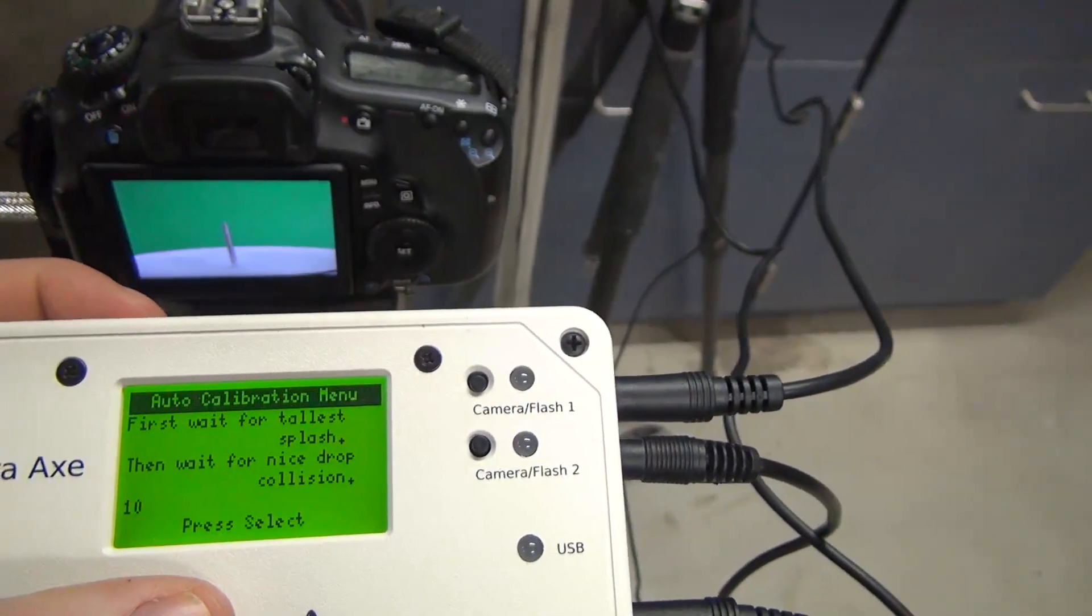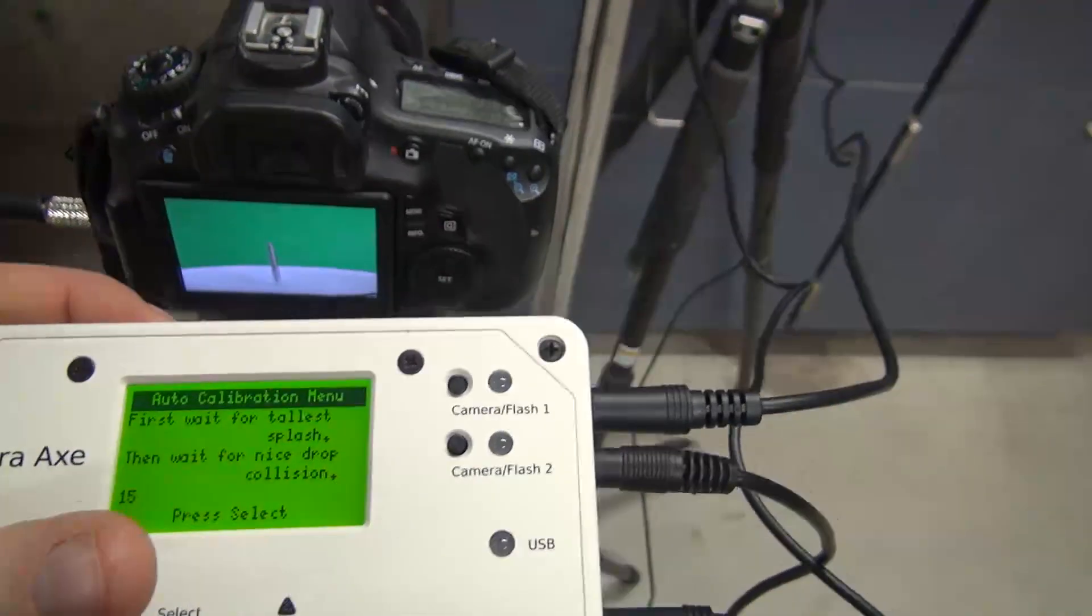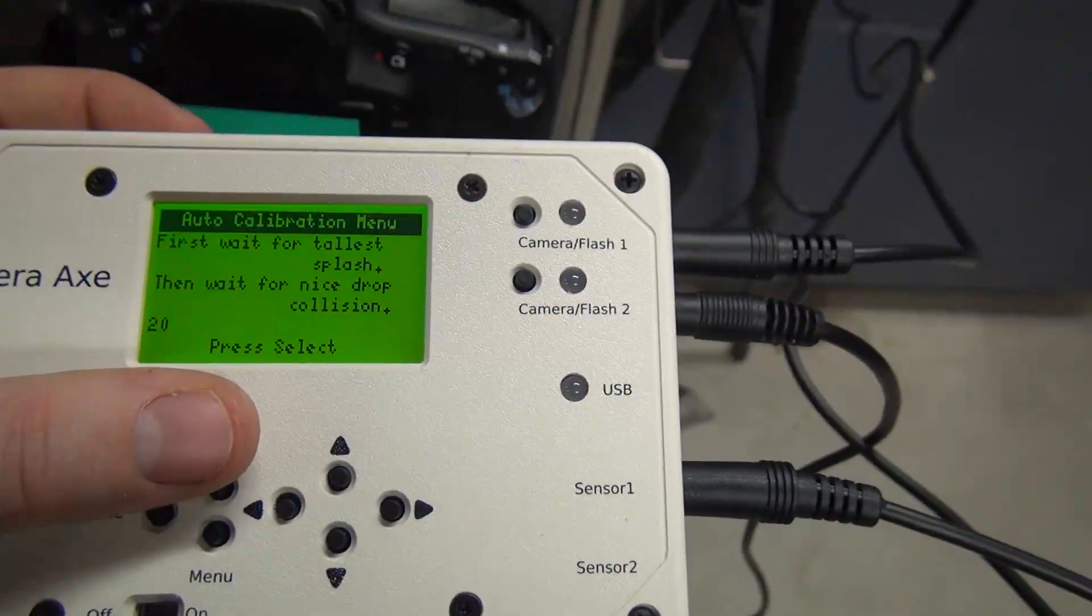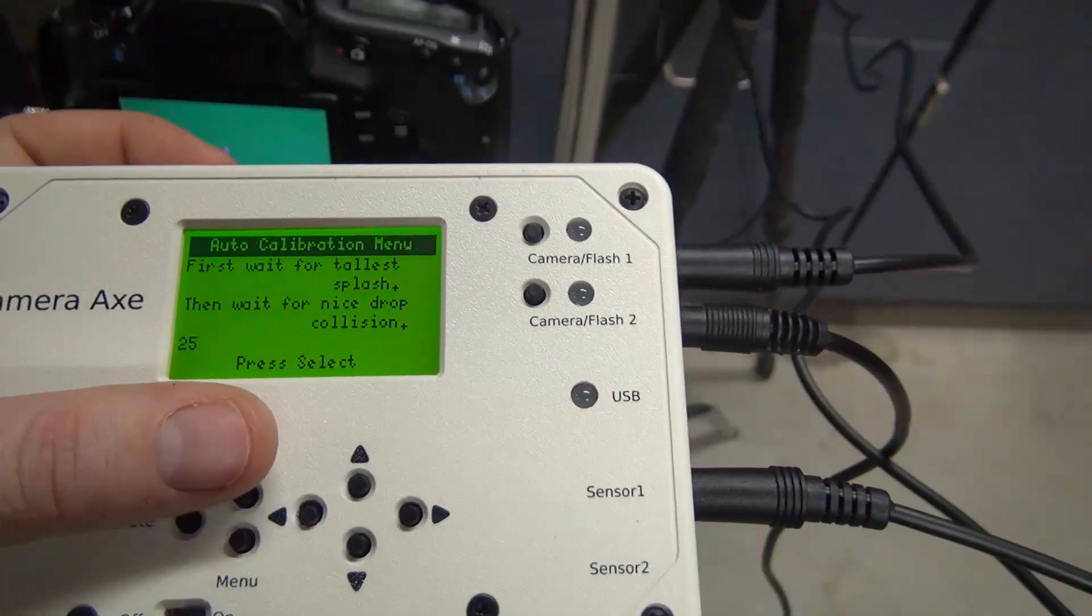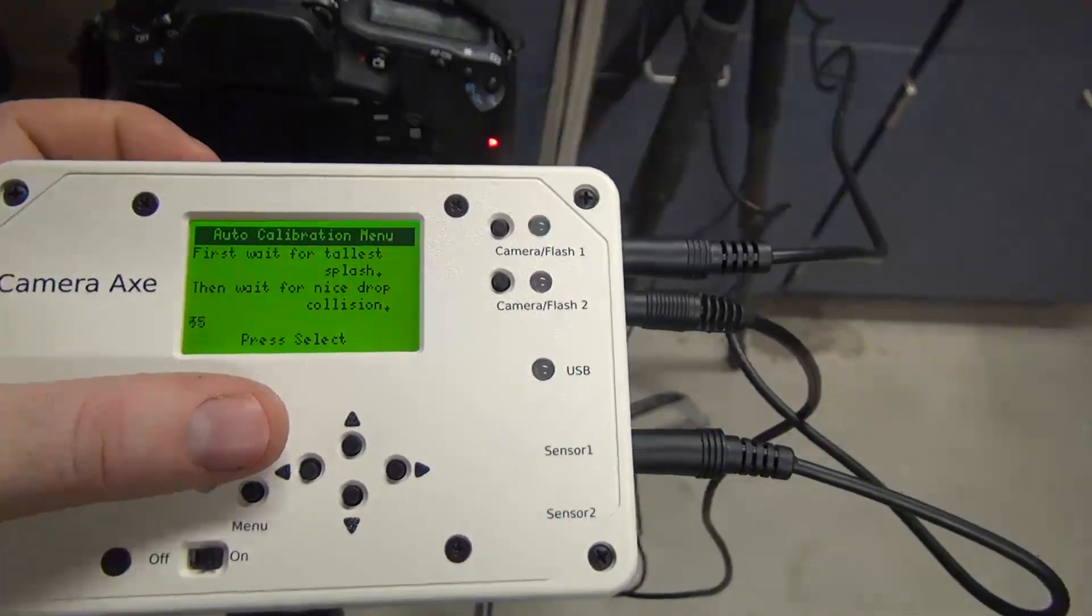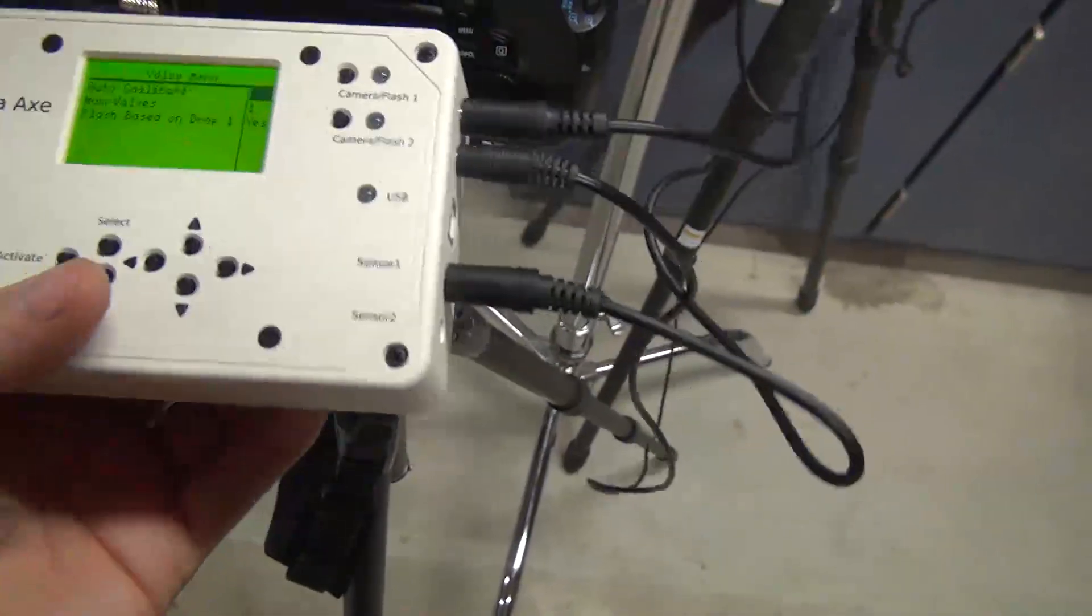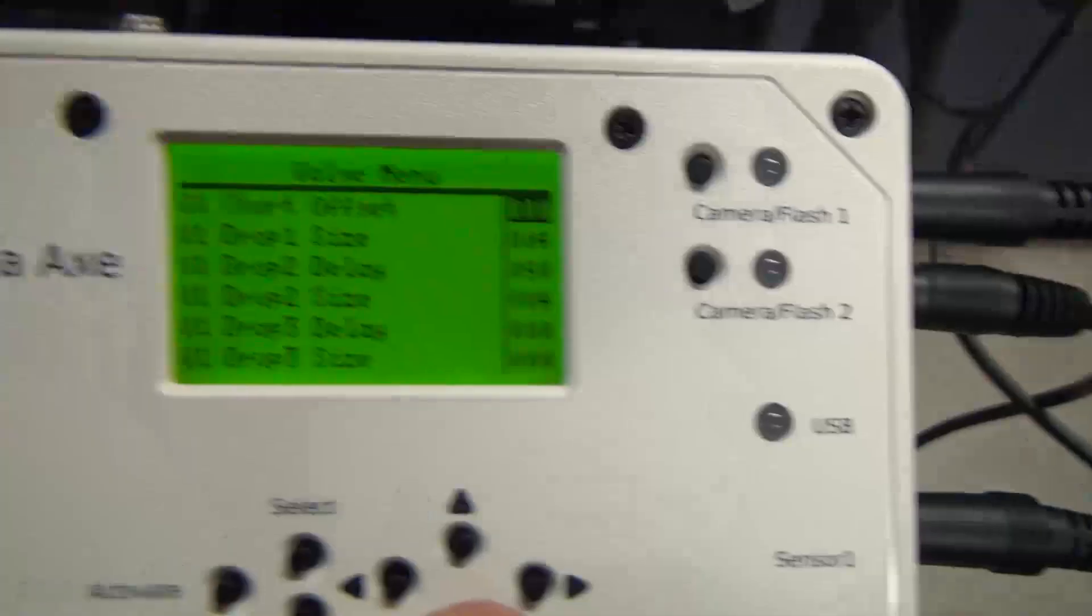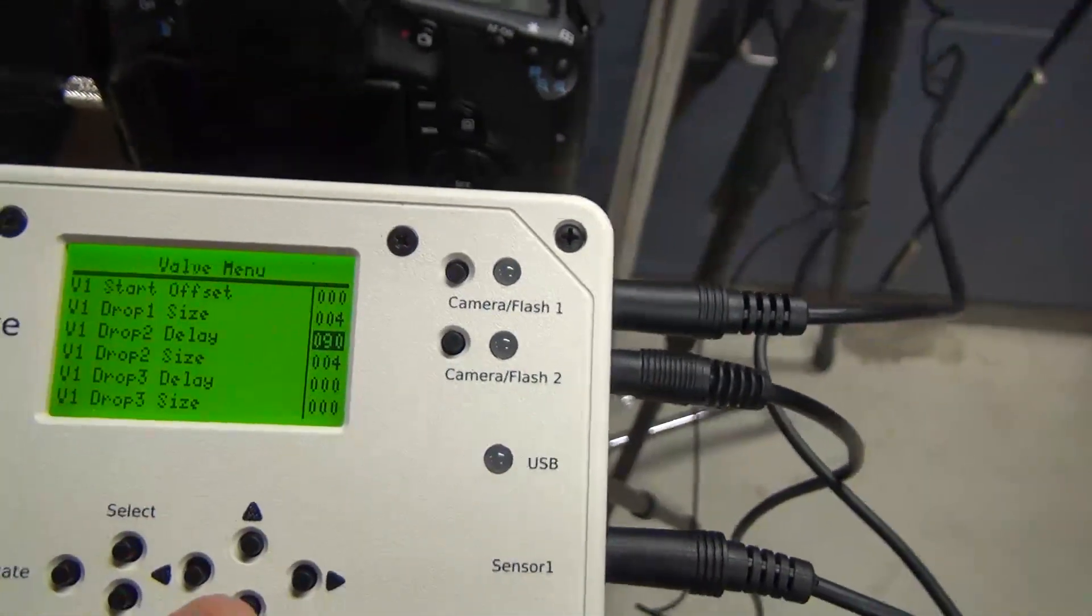And now I'd wait for it to create a nice splash drop. And if I wanted to, I can use the up and down arrows to more quickly get to it. But generally, it only takes about 10 or so shots, and that should be under two minutes. So now if the drops were making nice collisions, I'd hit select again. It takes me out of that, and it will have modified the values in these menus to repeat the droplet that was last, the shot that was last taken.